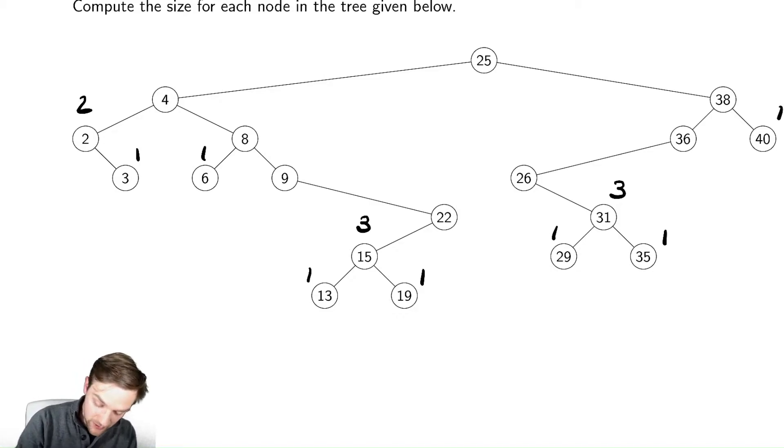So let's actually do this in a more practical way. I can figure out the size of 22, which is 4, the size of 9, which is 5, the size of 8, which is 1 plus 5 plus 1, that's 7. Then 4 is 2 plus 7 plus 1, that's 10.